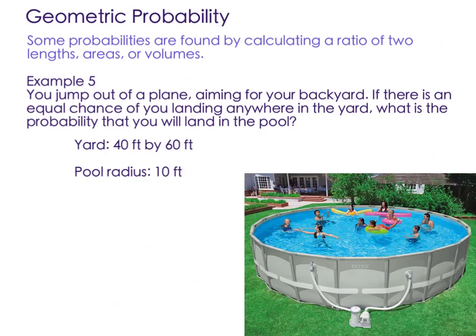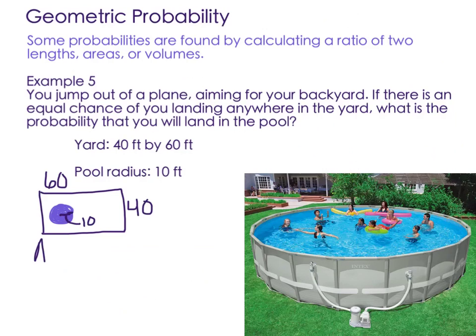And then the last type of probability is a geometric probability. And that's where we actually have physical areas or lengths or volumes. So here's an example. You jump out of a plane aiming for your backyard. If there's an equal chance of you landing anywhere in the yard, what is the probability that you will land in the pool? So I'm going to draw your yard for you. It's a rectangular backyard. And it says it's 40 feet by 60 feet. And then you have a pool in the yard, circular, with a radius, remember radius is halfway, of 10 feet. So all we're doing is actually doing an area calculation here. The probability of landing in the pool would be the area of the pool out of the area of the whole yard.